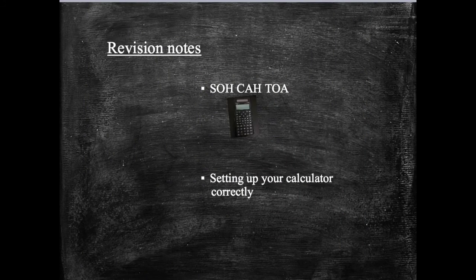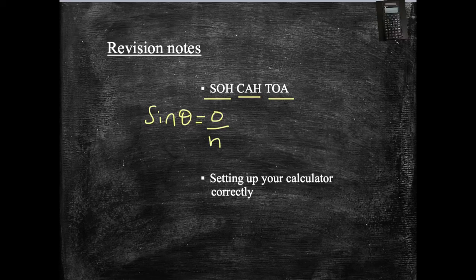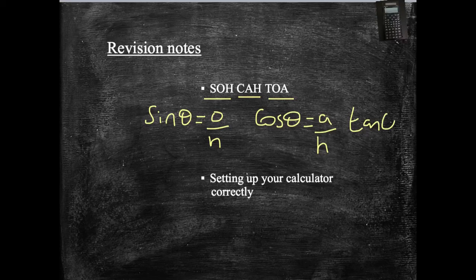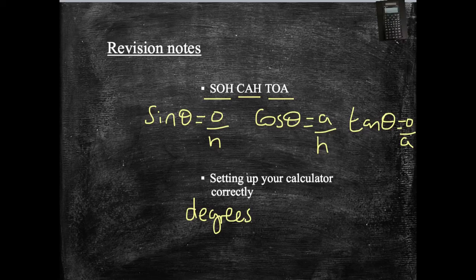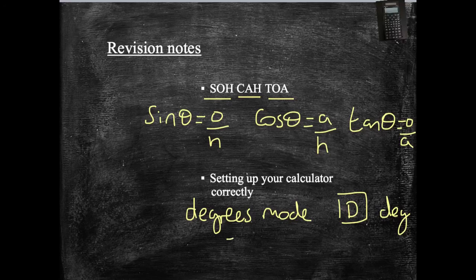We've still been using SOH CAH TOA just like before. We're thinking whether we're using sine, cos, or tan. Sine of an angle, sine theta equals opposite over hypotenuse. Cos of the angle equals adjacent over hypotenuse. And tan of an angle equals opposite over adjacent. Ensure that your calculator is in degrees mode, so at the top you should be looking for a D or deg. Make sure you're using to the minus 1, your inverse function. And also, just double check that you close any brackets after your calculation, just to make sure that your calculator is doing the thing that you want. Hopefully, this has been useful to you. Good luck in any exams or tests that you've got coming up. And look out for more videos.